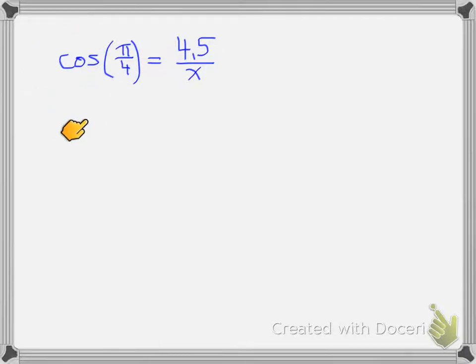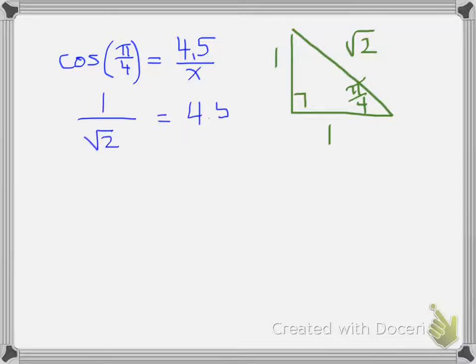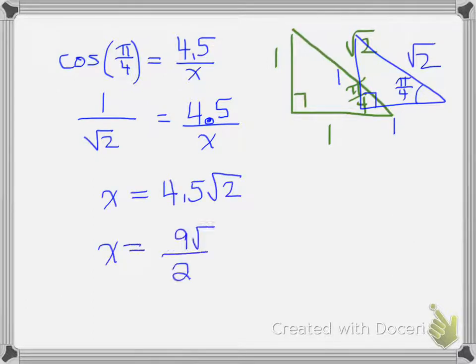Well, folks, you need to look at cosine of pi over 4 and note the special angle triangle. The special triangle, pi over 4 is one of those special angles. Pi over 4 has the values 1, 1, root 2, because it's an isosceles triangle. So, cosine of pi over 4 is equal to 1 over root 2. And that's equal to 4.5 over x. So, what you would do now is cross multiply, and you will get the value of 4.5 times root 2, which is 9 root 2 over 2.